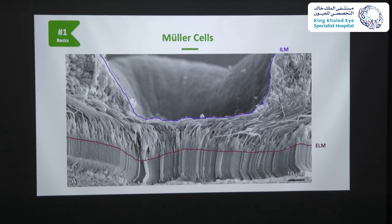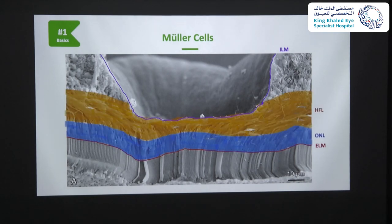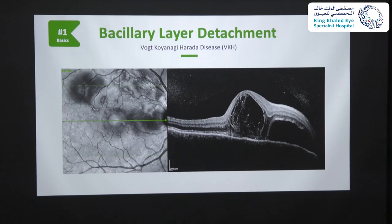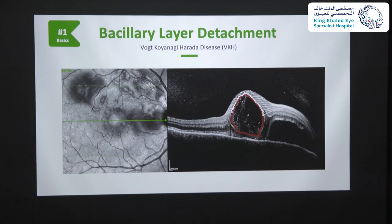Müller cells pass through the outer nuclear layer and then turn obliquely in the Henle fiber layer. Close to the external limiting membrane, the microvilli of Müller cells surround the photoreceptor inner segments. This could explain what happened to a patient presenting with unilateral initial onset acute VKH to our uveitis team. Here we can see bacillary layer detachment, which is basically adhesions at the level of the inner segment myoid, where retinal tissue overlying the cyst is supported by Müller cells, but the floor of the cyst is not supported by Müller cells, but fairly adherent to the underlying RPE, making that area vulnerable to a split.